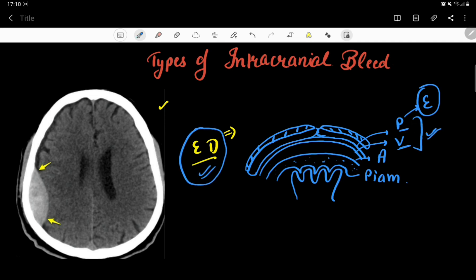In extradural hematoma, the bleed is present below the skull and above the dura mater — specifically above the periosteal layer of dura mater. The blood collects between the endosteal layer of dura mater and the skull bone. Because the periosteum of the skull bone goes to the outside of the bone at suture lines, this epidural hematoma does not cross the suture lines.